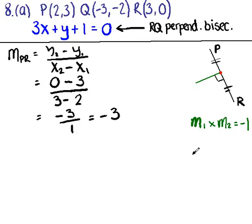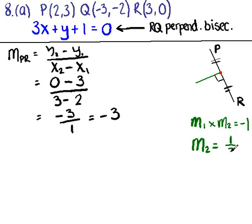What we want to do now is use the perpendicular gradient formula to find the gradient of the green line. The gradient of the second line m2 is just equal to the original gradient inverted with the sign changed. We had minus 3 over 1 — turning that upside down gives us one third, and since it was originally negative, our gradient is now positive. So the gradient of the perpendicular bisector shown in green is one third.